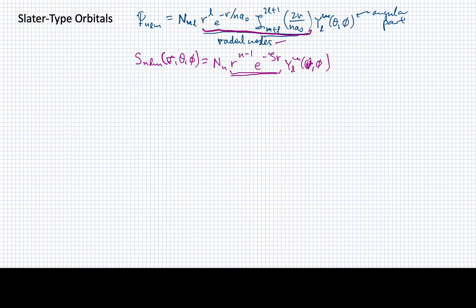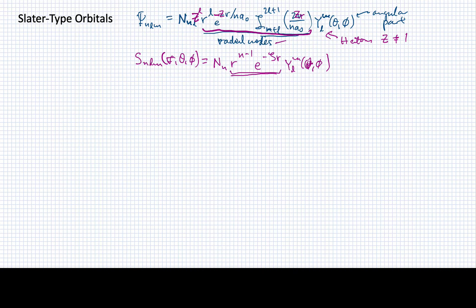The hydrogen atom wave function was drawn assuming a nuclear charge of plus one. If we had a nuclear charge Z not equal to one, it would appear virtually everywhere we have an r — we'd have a factor of Z to the l, a factor of Z in the Laguerre polynomials, and a factor of Z in the exponential decay. So what we see in the Slater orbital is a way of modeling that factor of Z when we talk about heavier atoms that have a larger charge.